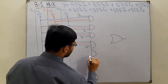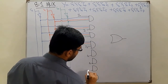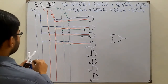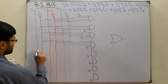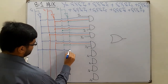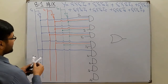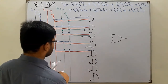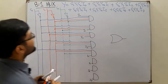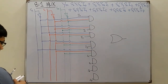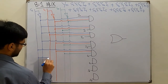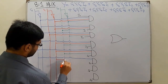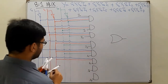For the remaining gates: I4 here, I5 here, I6 here, and I7 here. For the fifth gate we have S2, S1's complement, and S0's complement — and I4. For the sixth gate we have S2, S1's complement, and S0 directly — and I5.